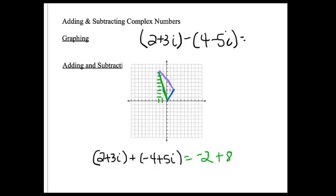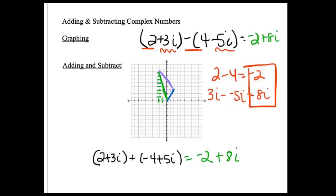Which I'm hoping is what you put down on your paper, because 2 minus 4 is negative 2, and 3i minus a negative 5i is 8i. So your resultant vector is negative 2 plus 8i.